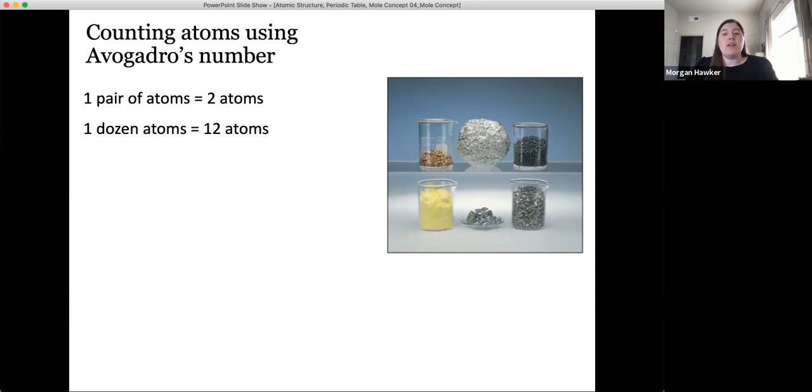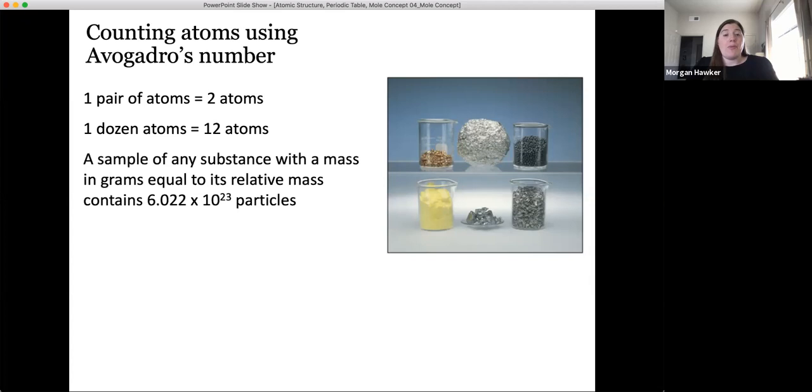Instead, we'll define a mole of atoms as this seemingly random number 6.022 times 10 to the 23rd. So if we had 6.022 times 10 to the 23rd particles, what we would say is that that number would be equal to one mole. So one mole of atoms would be equal to 6.022 times 10 to the 23rd atoms. This is what we refer to as Avogadro's number. And again, the number might seem random, but this is actually the number of atoms of carbon-12 that are found in exactly 12 grams of carbon-12. So we're all in reference to carbon-12 with these types of conventions.